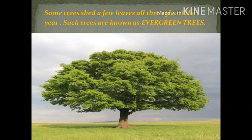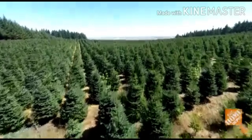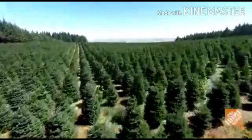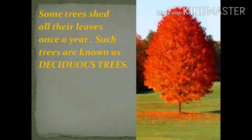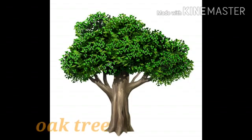Some trees shed a few leaves all throughout the year. Such trees are known as Evergreen trees. While some trees shed all their leaves once a year. Such trees are known as Deciduous trees.